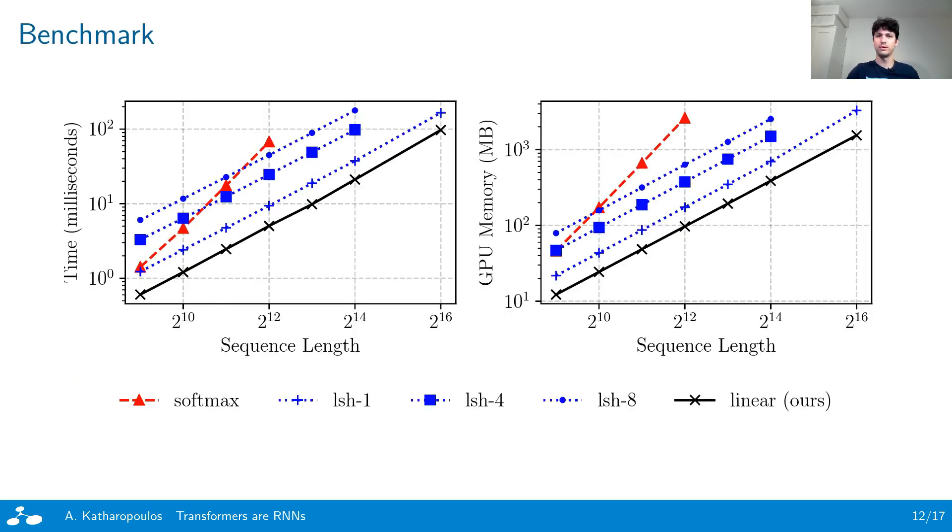For the benchmark, we measure the time and memory that each attention layer requires to perform a single forward-backward pass for sequence lengths ranging from 512 to 65,000 elements long. For all methods, we use the non-autoregressive formulation and the maximum batch size that fits in our GPU. We observe that both Reformer and our model scale linearly with respect to the sequence length, in contrast to the quadratic scaling of softmax transformers.